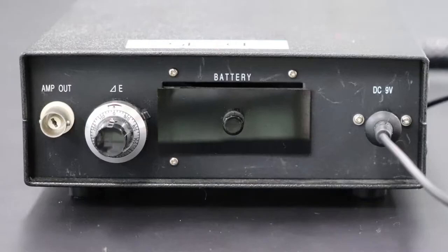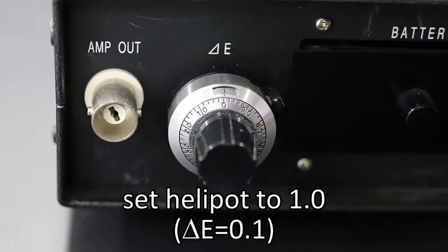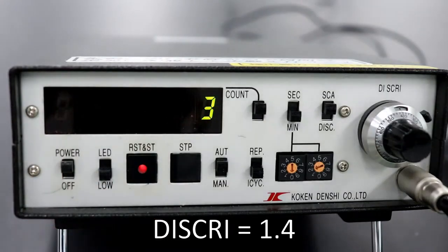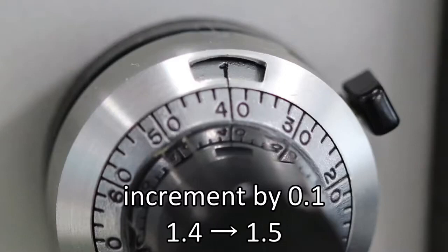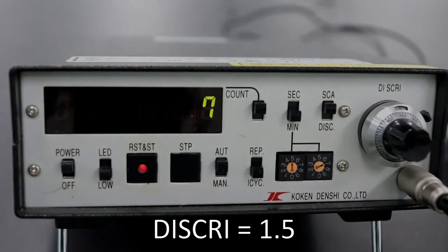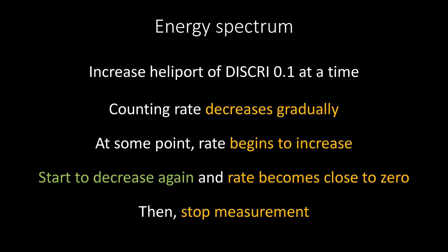Set the delta E setting. The delta E setting is made at the helipot on the back of the detector control unit. Set it to 1.0. Delta E is now set to 0.1. Press the start button to start the measurement. After each measurement, increase the helipot's value by 0.1. Increase the value of DISC by 0.1, and repeat the measurement.